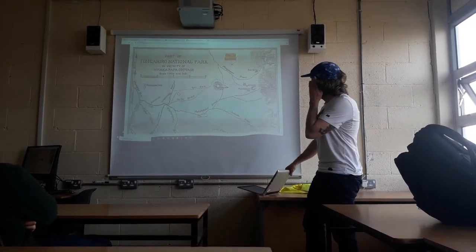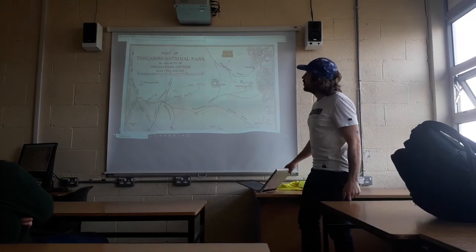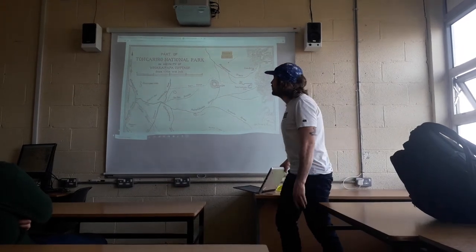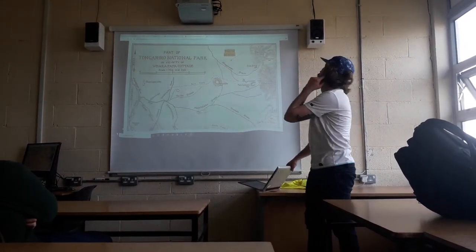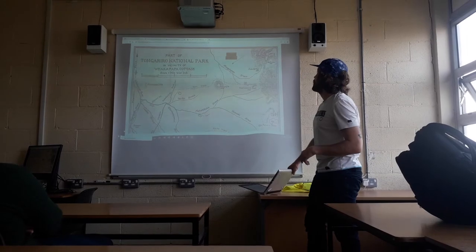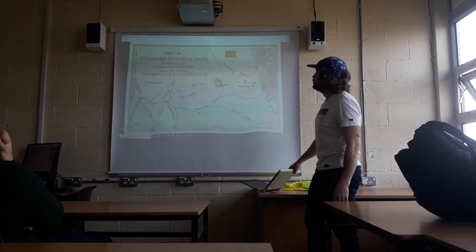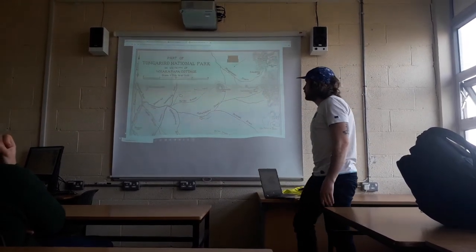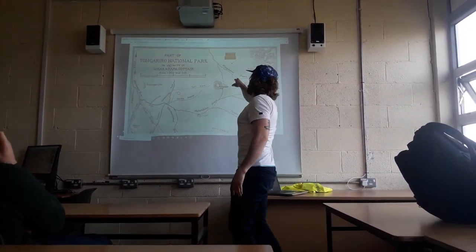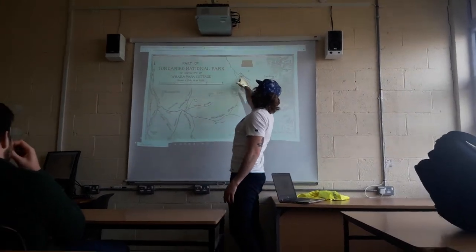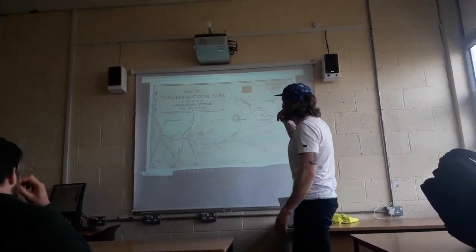This is a map of the Tongariro National Park. Tongariro is an old volcano and there are gorges and streams running through it. This is the Mangatepopo stream where this incident happened.